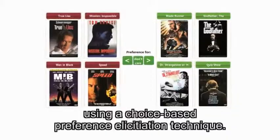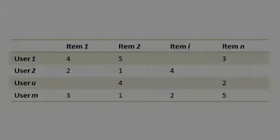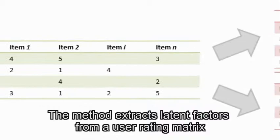We introduce an interactive recommending approach using a choice-based preference elicitation technique. The method extracts latent factors from a user rating matrix and generates dialogues in which the user iteratively chooses between two sets of sample items with very low or very high values for one of the factors.